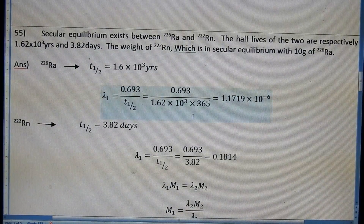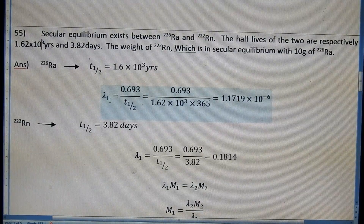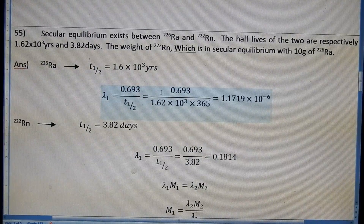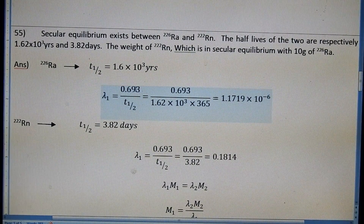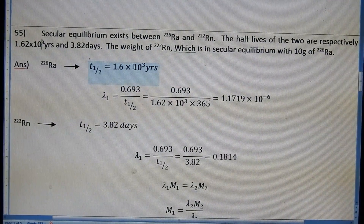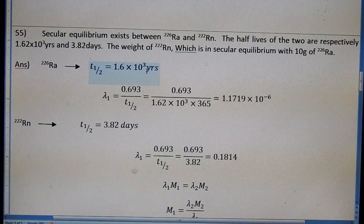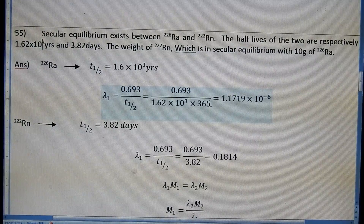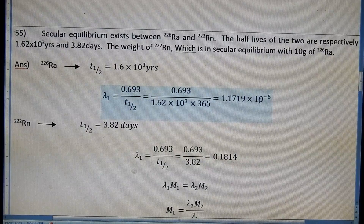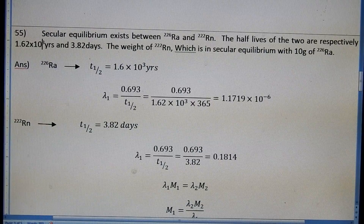To calculate λ₁ for Ra-226, the formula is 0.693 divided by the half-life. The half-life is in years, so we convert: 0.693 divided by (1.62 × 10⁴ years × 365 days per year), giving us λ₁ = 1.17 × 10⁻⁶ per day. This is the decay constant of Ra-226.